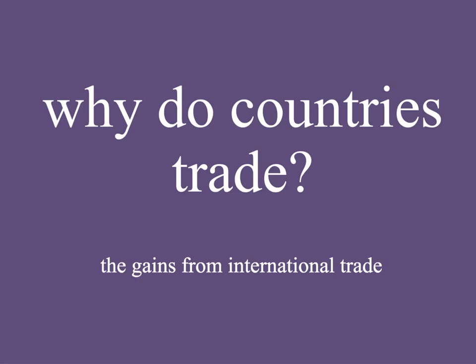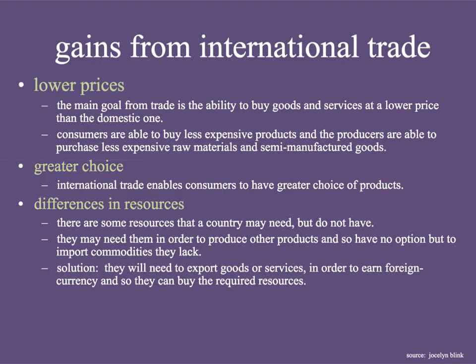So what are the gains? Why would it be better for a country to trade with another country? The first one is pretty simple: lower prices. The main goal from trade is the ability to buy goods and services at a lower price than the domestic one. Consumers are able to buy less expensive products, and producers are able to purchase less expensive raw materials and semi-manufactured goods. On average, in the long run, lower prices will be advantageous to consumers because they're going to use less of their income to buy a particular good. And if producers can buy a factor of production — some raw material from another country at a lower price — then they gain as well.